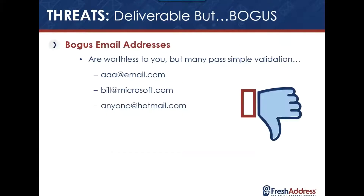The next category is deliverable but bogus. Most of these email addresses are going to be worthless to you, but they may pass simple validation — something like AAA@email.com or bill@microsoft.com. You've probably seen many of these.